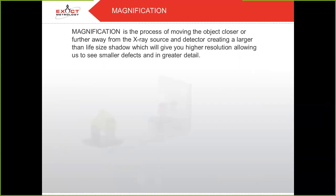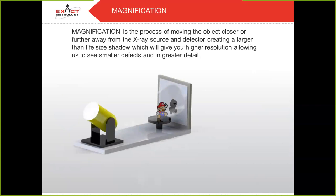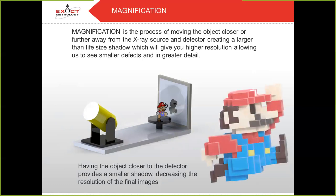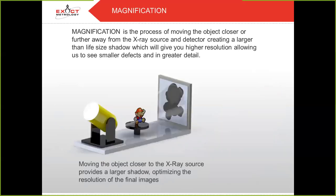And magnification. Magnification is the process of moving the object closer or further away from the X-ray source and detector, creating a larger-than-life shadow, which gives you a higher resolution, allowing us to see smaller defects in greater detail. Having the object closer to the detector provides a smaller shadow, decreasing the resolution of the final images. Moving the object closer to the X-ray source provides a larger shadow, optimizing resolution of the final images.